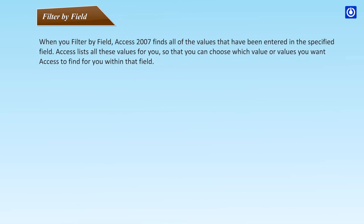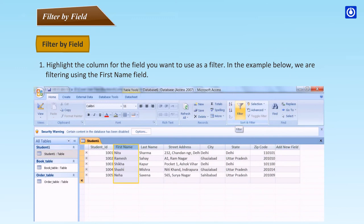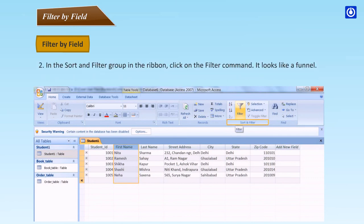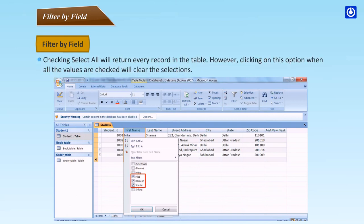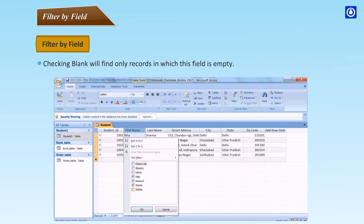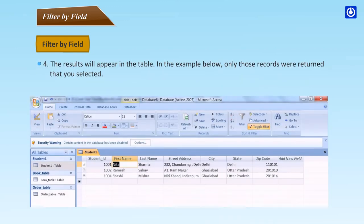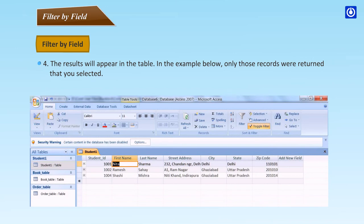Filter by Field: Access 2007 finds all values entered in the specified field and lists them so you can choose which values to find. To filter by field, highlight the column for the field you want to use as a filter, then click the Filter command (the funnel icon) in the Sort and Filter group in the ribbon. When the dialog box appears, select the value you want to use as a filter. Checking Select All returns every record; clicking it when all values are checked clears the selections. Checking Blank finds only records where the field is empty. Check as many values as you'd like and click OK. The results will appear in the table.